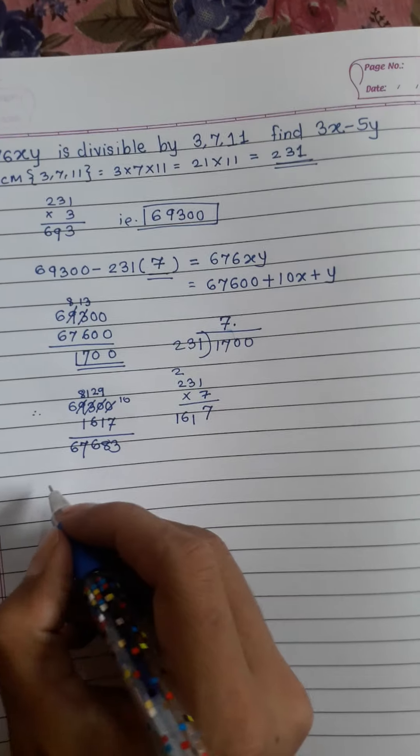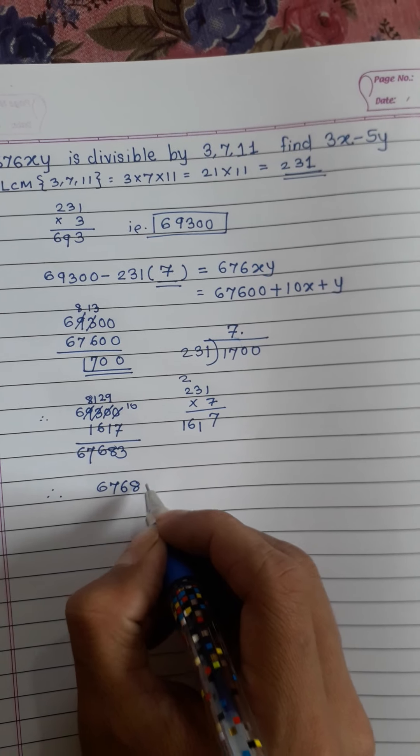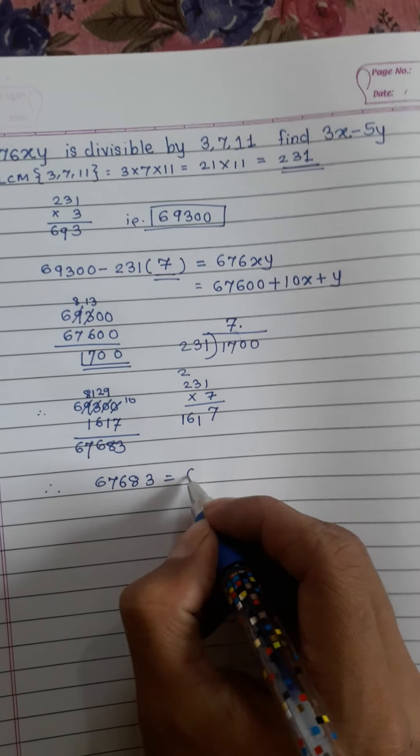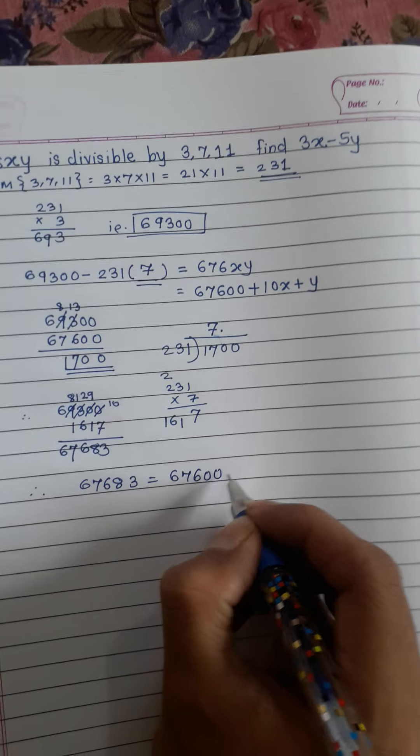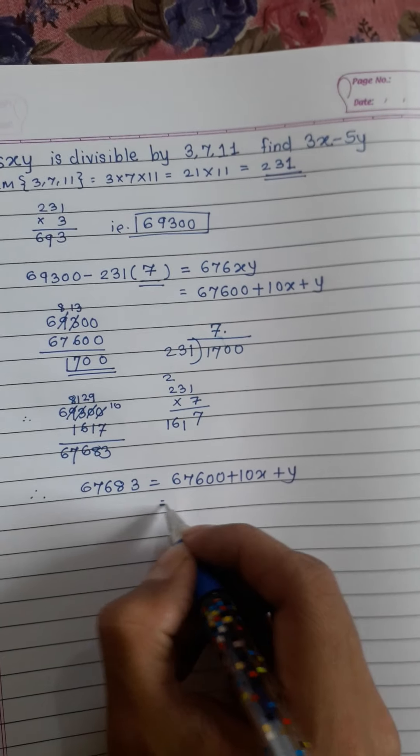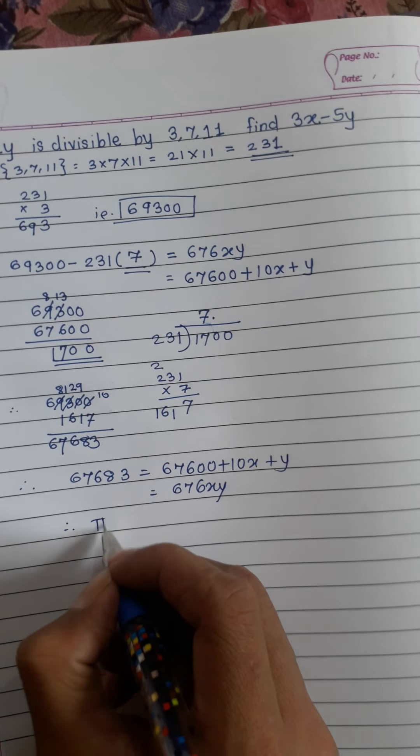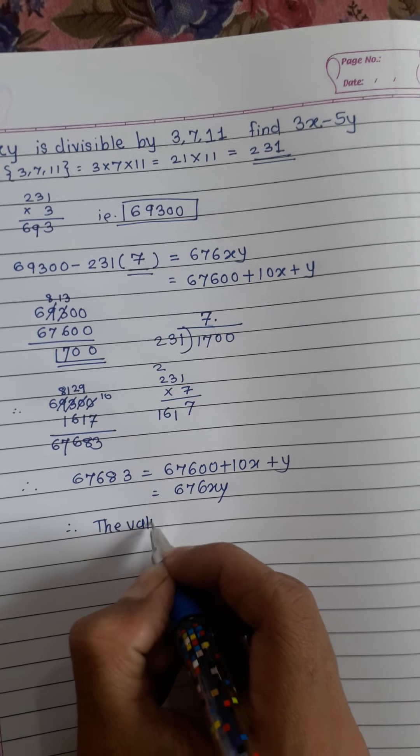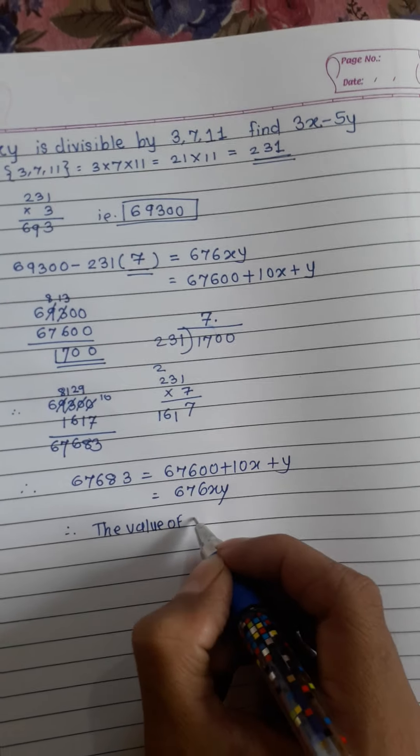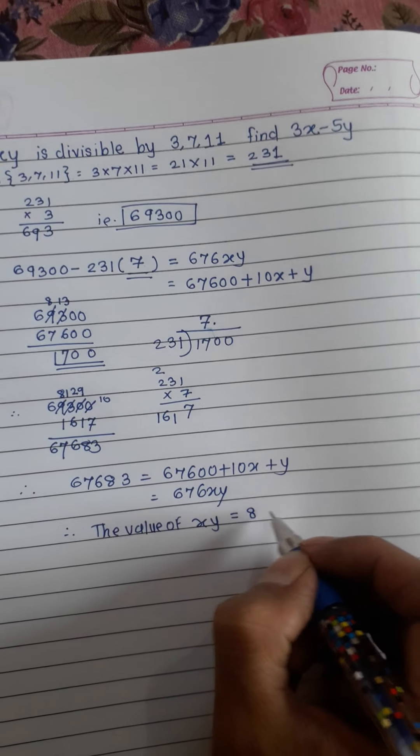6. Therefore, this number 6 7 6 8 3 is equal to 6 7 6 double 0 plus 10X plus Y. This number was originally 6 7 6 XY. Therefore, the value of X is 8, Y